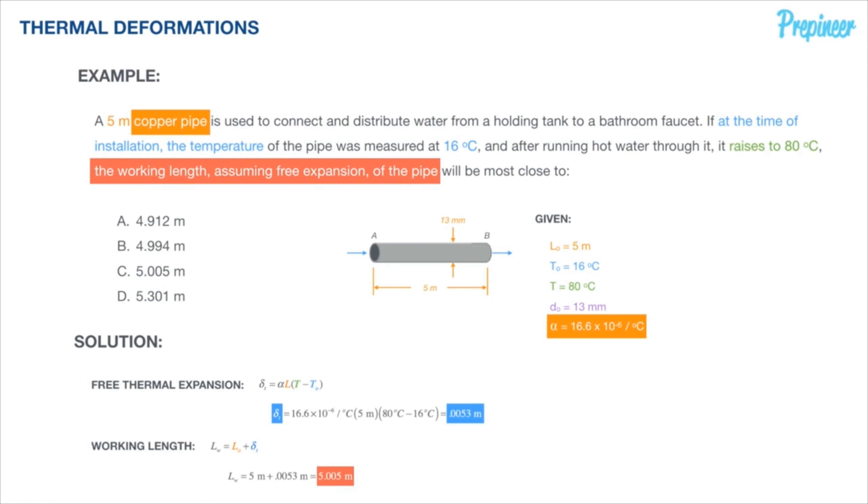That's our answer and the correct answer, looking at our answer options, is going to be selection or option C, 5.005 meters.